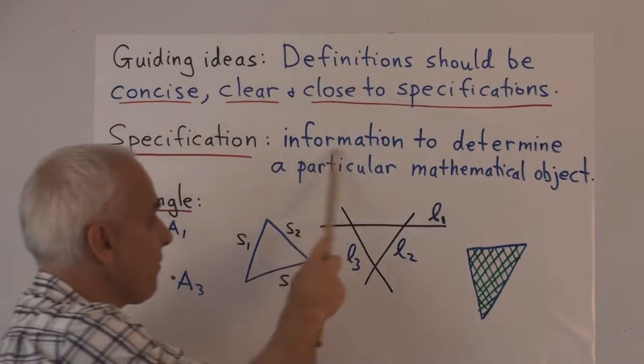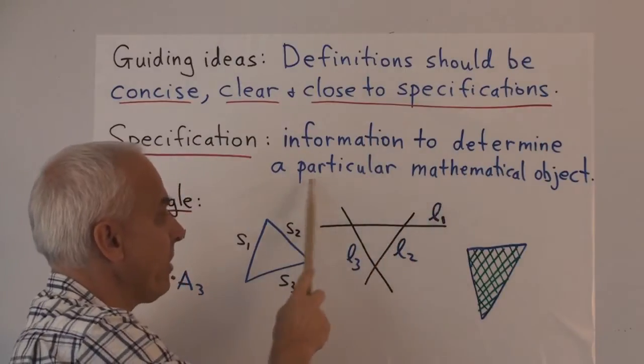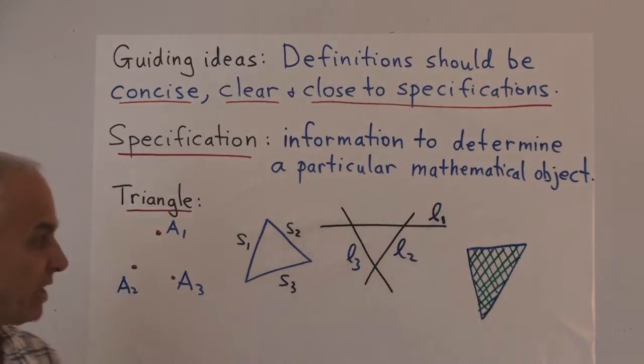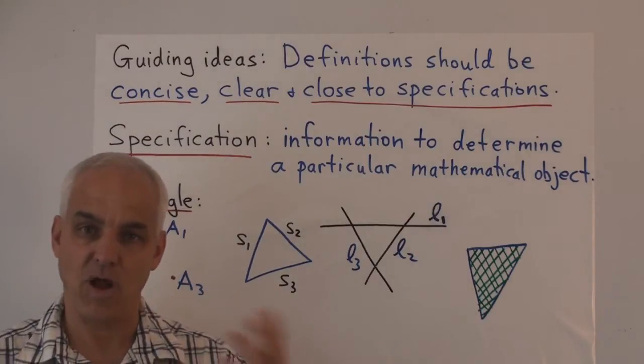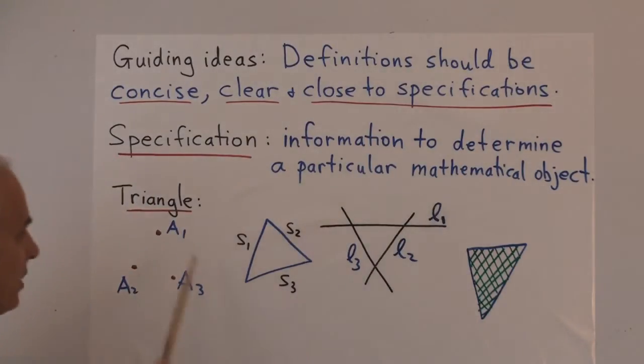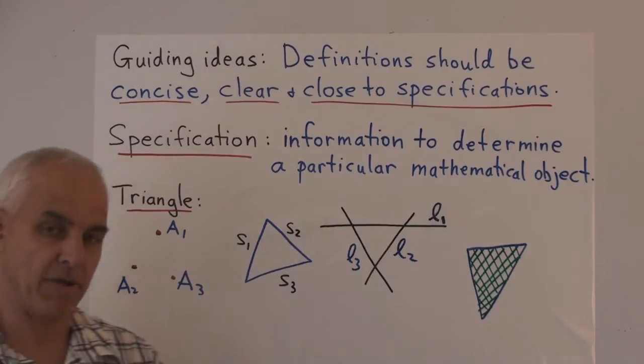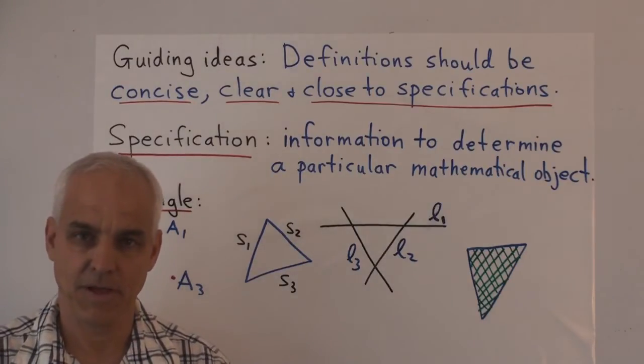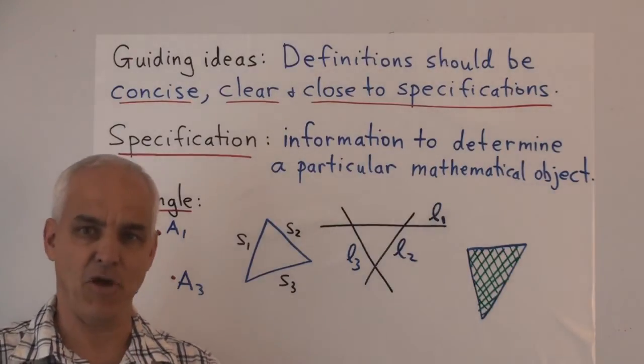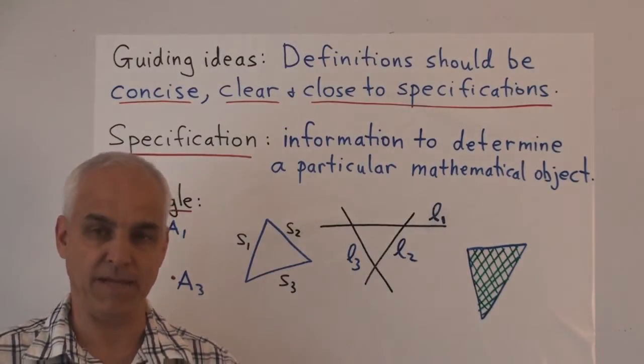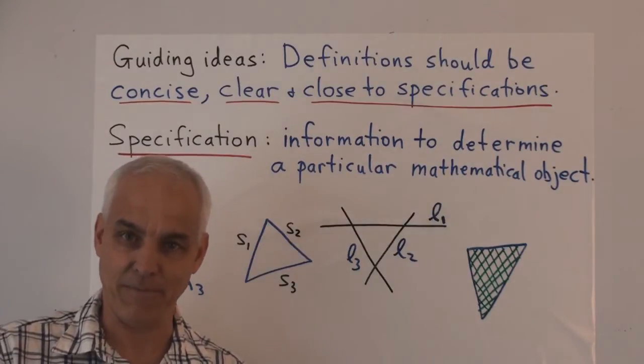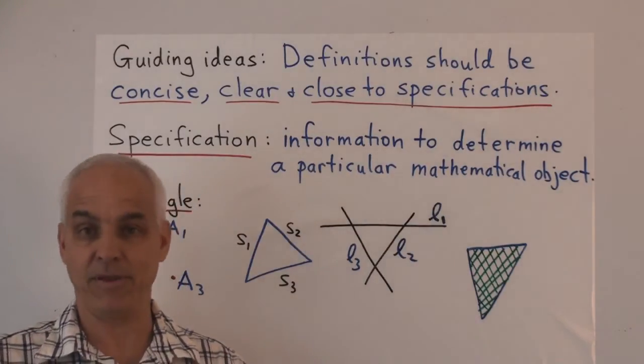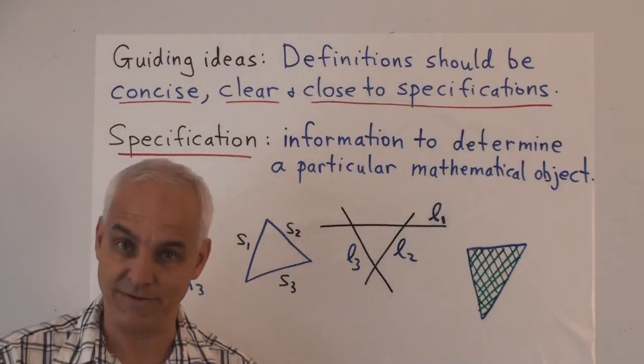I mean the information required to determine a particular mathematical object. To illustrate that, let's look at a triangle. Alright, so here's a triangle. And let's think about the question of how to define what a triangle is. This is a question that's finessed in almost all geometry books, rather amazingly. Even though a triangle is an absolutely fundamental mathematical object, somehow people think it's not necessary to define what it is exactly.